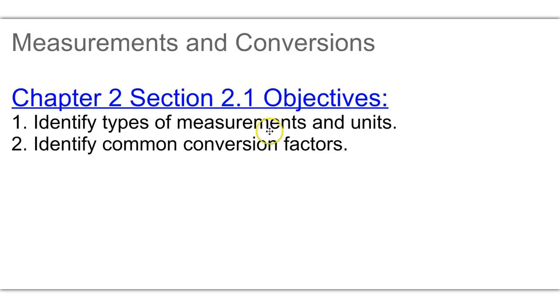Chapter 2, section 2.1 is going to be measurements and conversions. We're going to identify types of measurements and units that will be utilized in chemistry, and we're going to identify common conversion factors that you'll have to memorize.